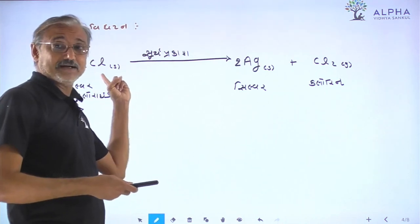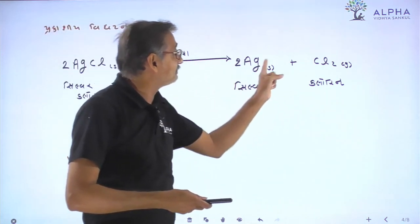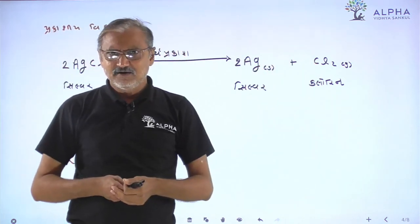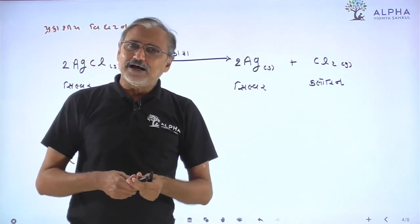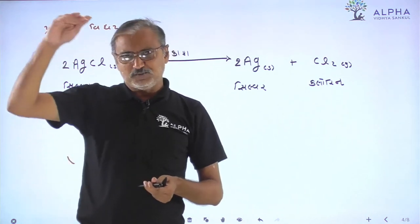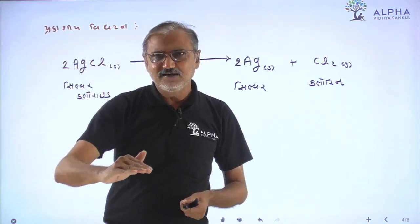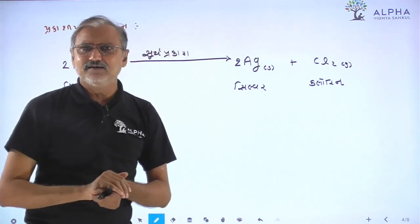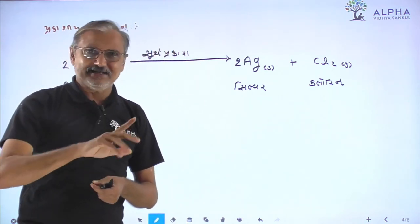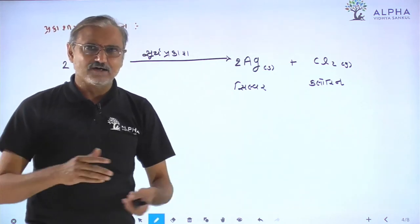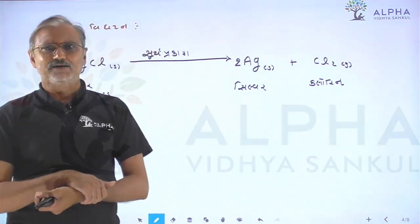So you have three types of decomposition: ushimiya vighatan thermal decomposition, vidyutiya vighatan electrolytic decomposition, and prakashiya vighatan photochemical decomposition. Each one carries one mark. We'll continue with the next question.